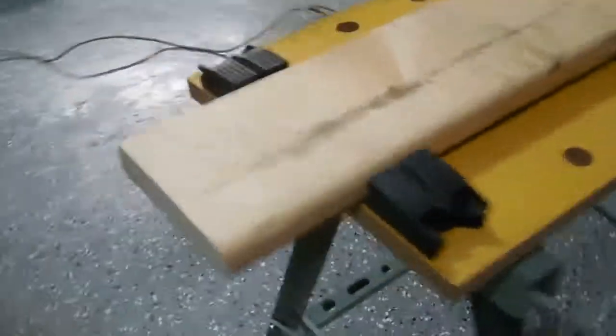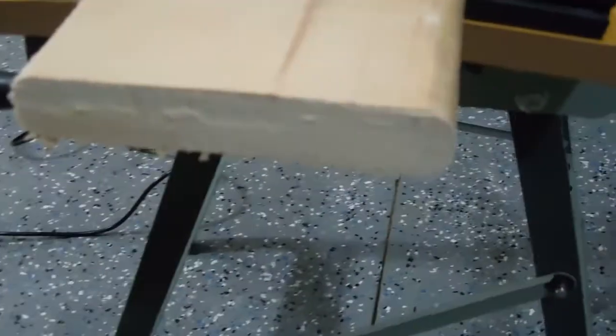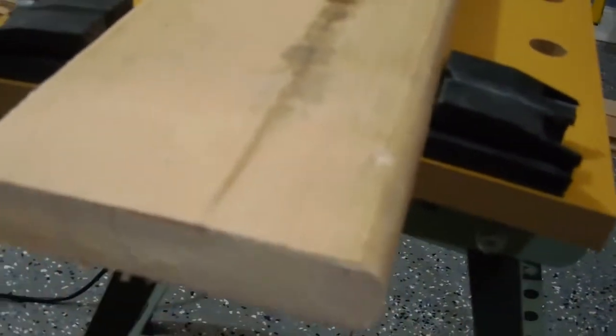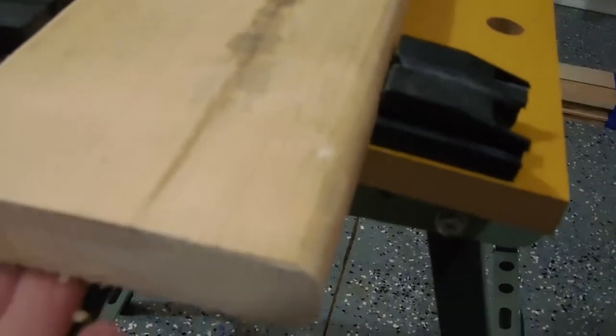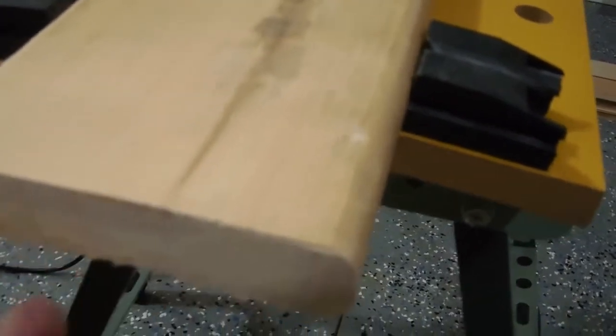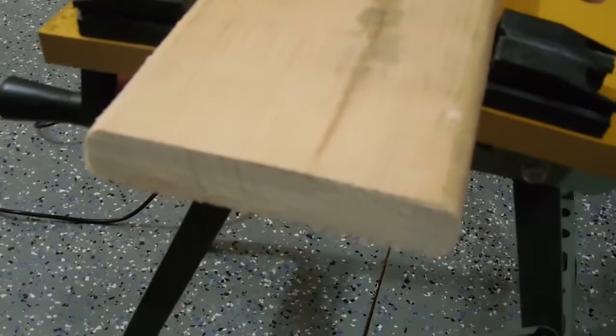And here's a close-up of the cut that I got. There's some sawdust on there. Nice smooth on this side. A little splintering on the back side but that's to be expected with the old blade that I used.